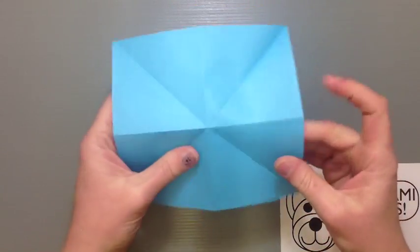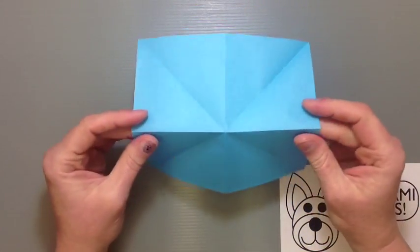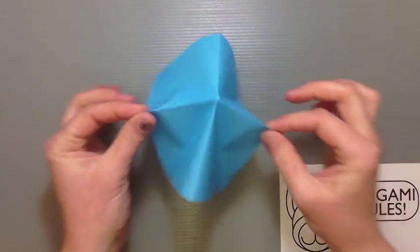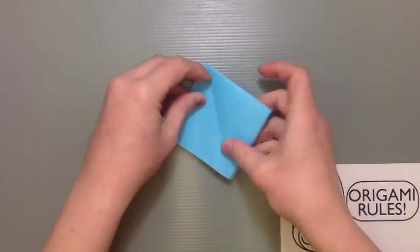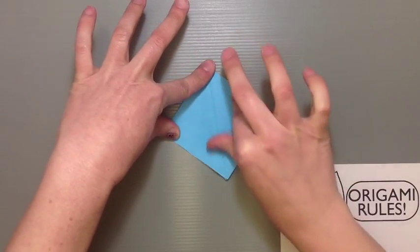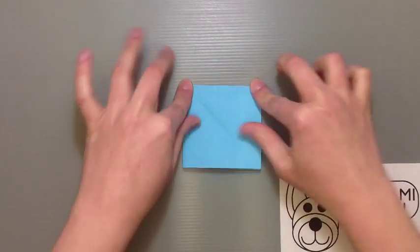Find the mountain creases, which are the ones that we made first. Pinch opposite sides and just push into the center. Things should just sort of shimmy around until you can get it to look like this nice big diamond or square, which is where the square base comes from.